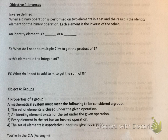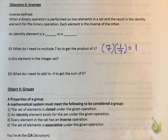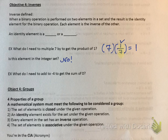Let's check out what we're supposed to put in these dashes right here. It says, what do I need to multiply 7 by to get the product of 1? If I have 7 times what equals 1, it's 7 times its reciprocal, which is 1 over 7, equals 1. Now, is that element 1 over 7 in the integer set? The answer is no. So this multiplication does not work for the inverse property if you're asking if it's part of the integer set.